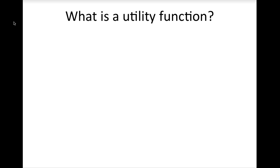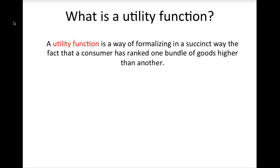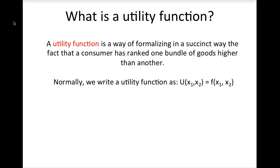First, you should be able to construct a utility function consistent with a set of preferences. You should be able to calculate a consumer's marginal rate of substitution from that utility function and explain the meaning of the value of the marginal rate of substitution in layperson's terms. So, what is a utility function? Simply put, a utility function is a way of formalizing, succinctly, the fact that a consumer has ranked one bundle of goods higher than another. We write a utility function as u of x1 and x2 is some function of x1 and x2. The function takes each combination of quantities of goods 1 and 2 in the bundle and assigns a numerical value, which we call utility, to the bundle.